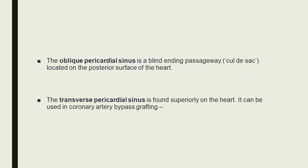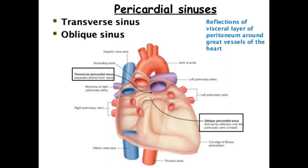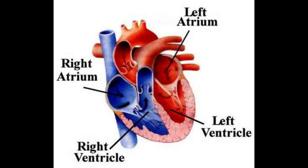Next is the pericardial sinuses. The pericardial sinuses are not the same as anatomical sinuses such as the paranasal sinuses. They are passageways formed from the unique way in which the pericardium folds around the great vessels. The oblique pericardial sinus is a blind-ending passageway located on the posterior surface of the heart. The transverse pericardial sinus is found separately on the heart and can be used in coronary artery bypass grafting.